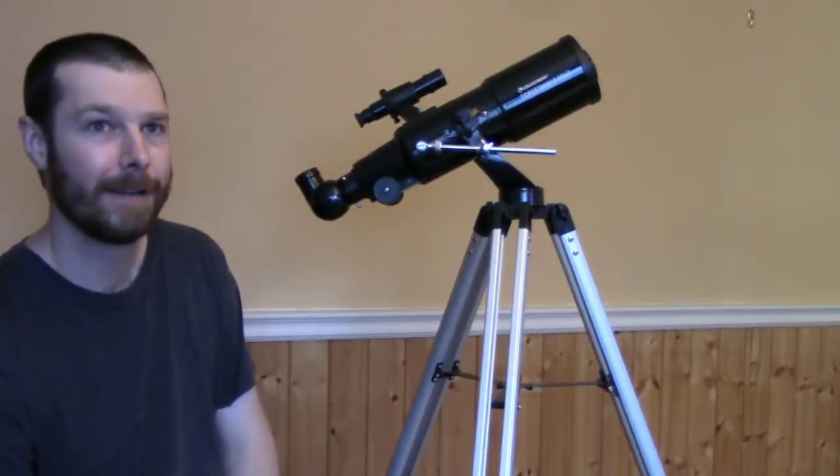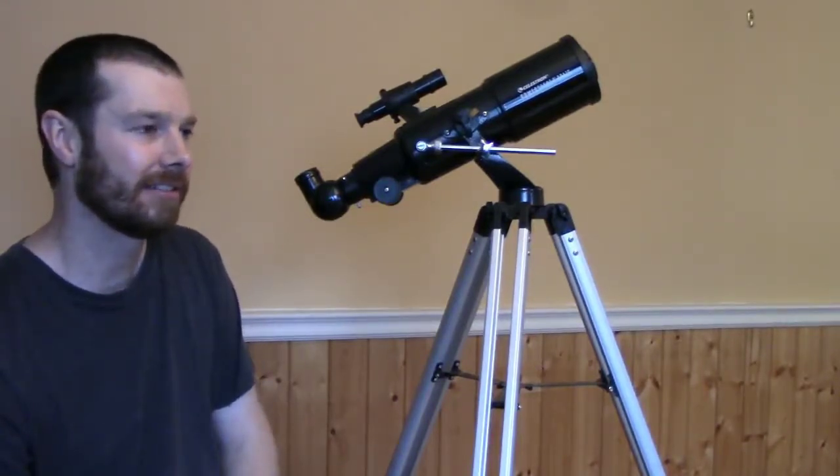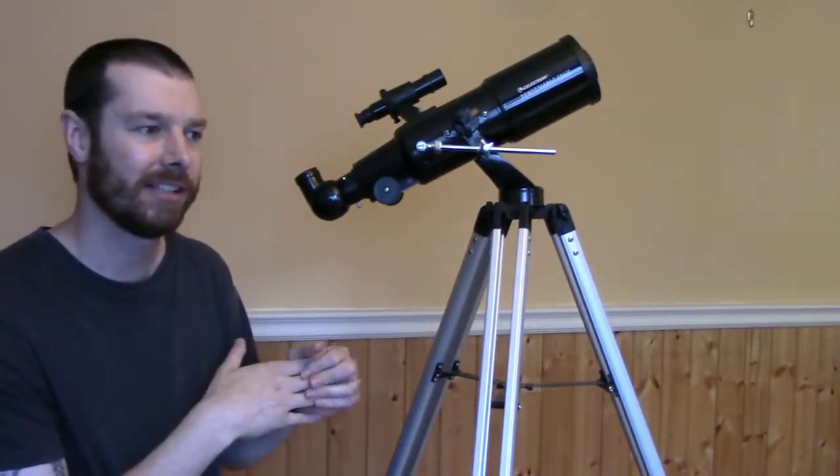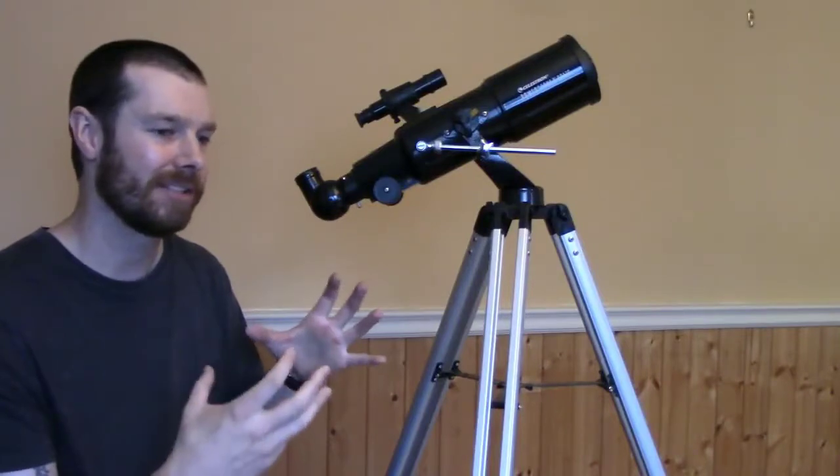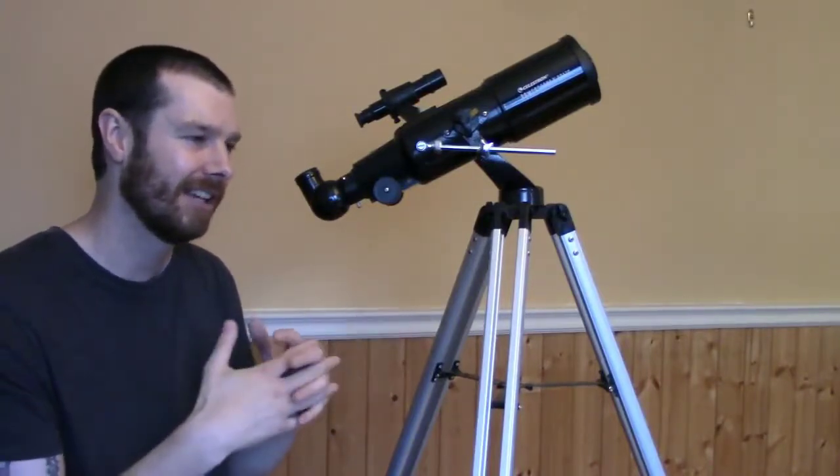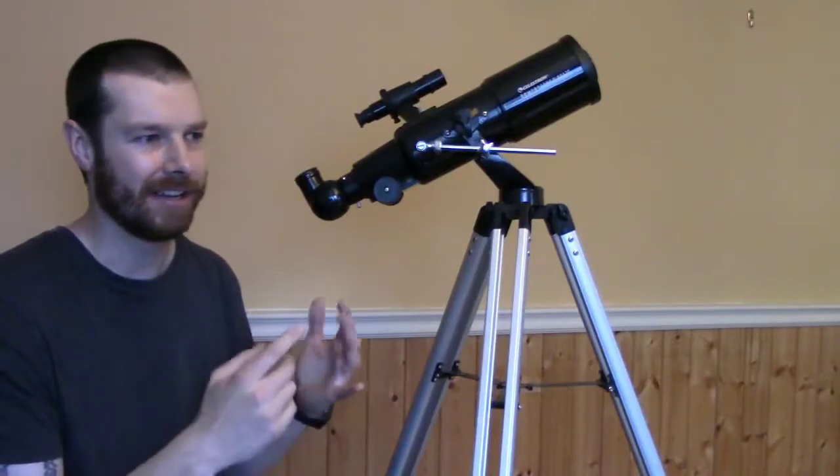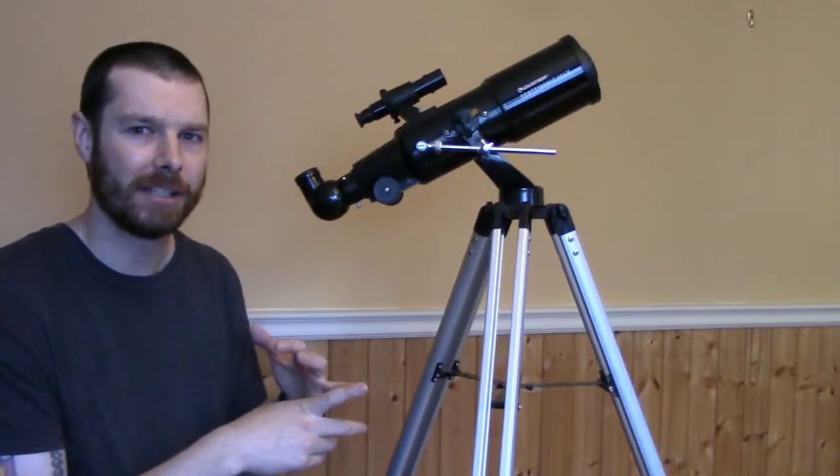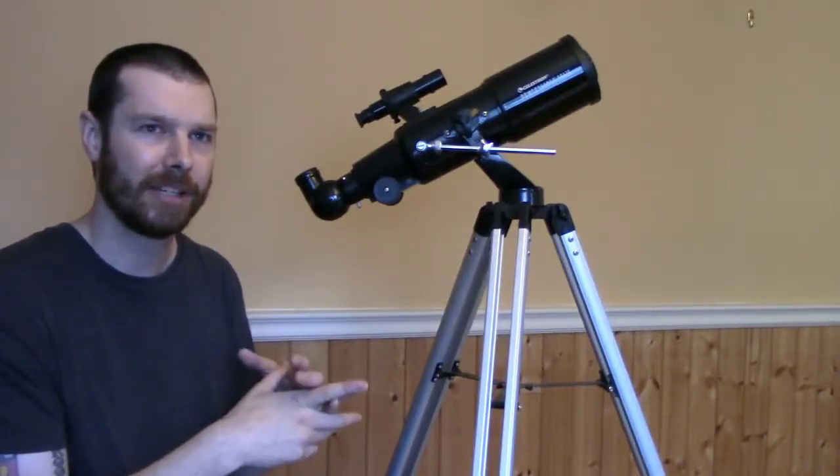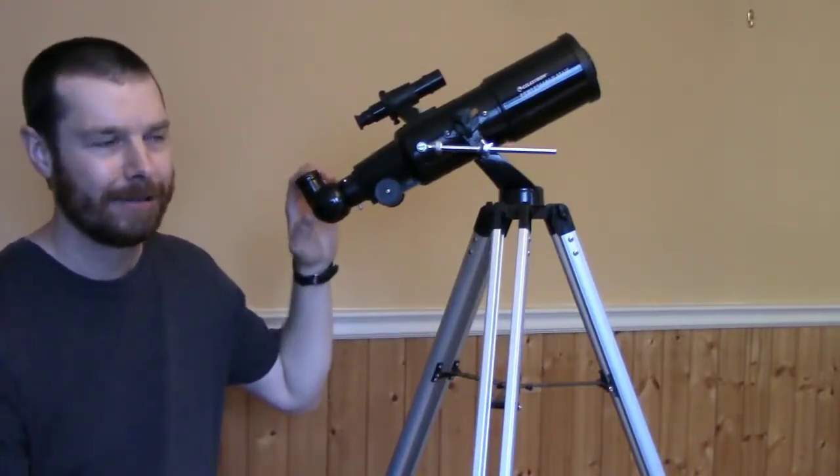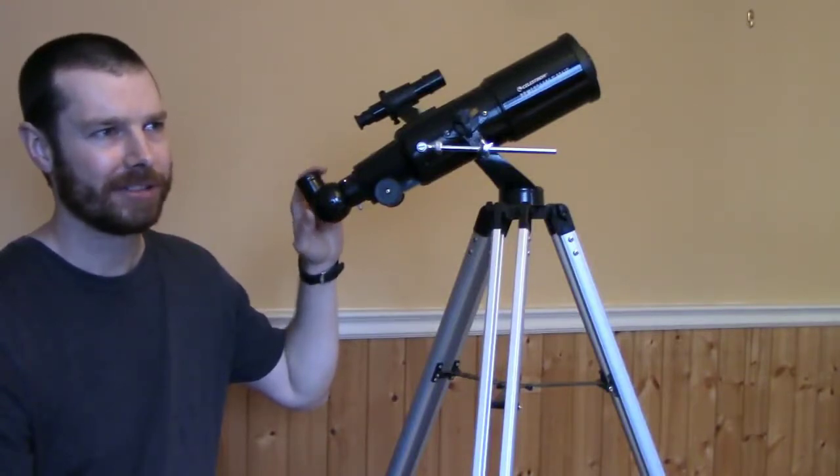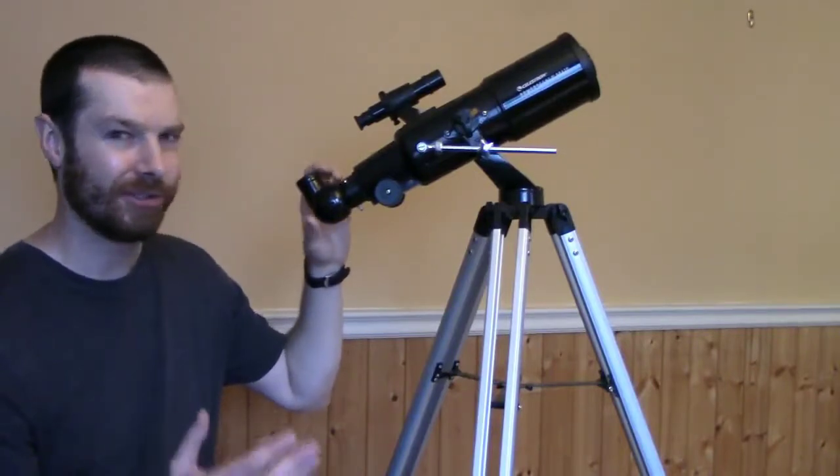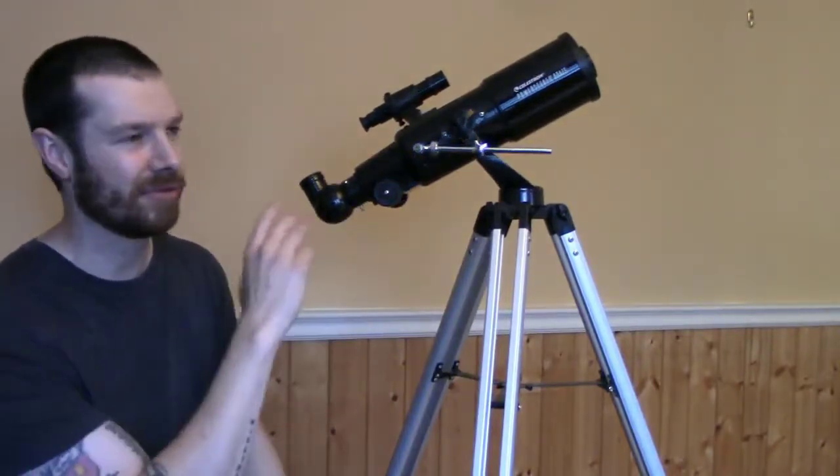One thing that I would recommend is maybe buying an eyepiece kit. Celestron makes a kind of cheaper eyepiece kit, I think it's around $50, and it has a 15 millimeter and a 9 millimeter eyepiece and a couple filters as well. So you have a moon filter and a few other filters for the planets, I think.